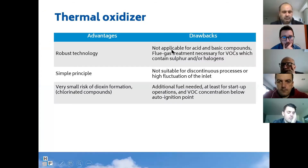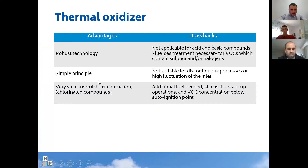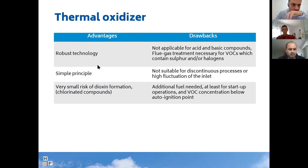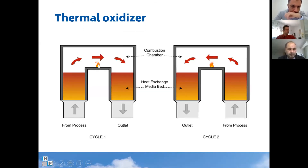The advantages of this technology are that it is robust — because it's a combustion system — it has a simple principle, and there is a very small risk of dioxin formation. The drawback is that if you don't have enough VOC to burn, you need to add methane to sustain the flame. If you have enough VOC, it acts as fuel and you have combustion. But with a low amount of VOC, you must add fuel to sustain the temperature and ensure oxidation.